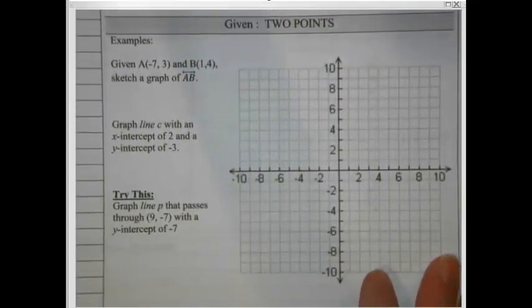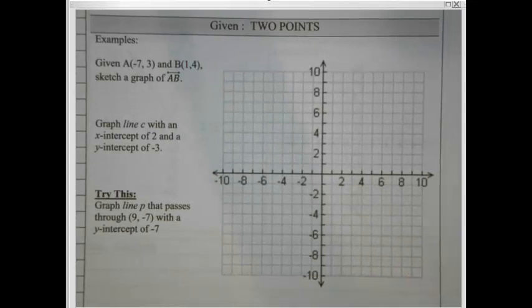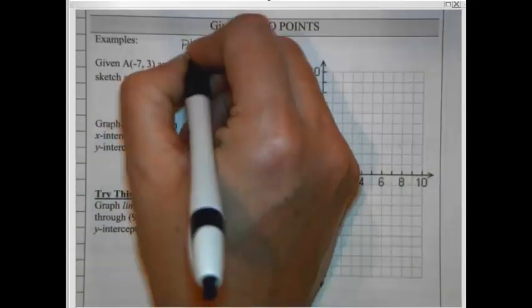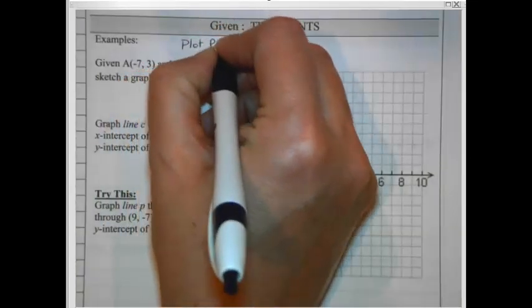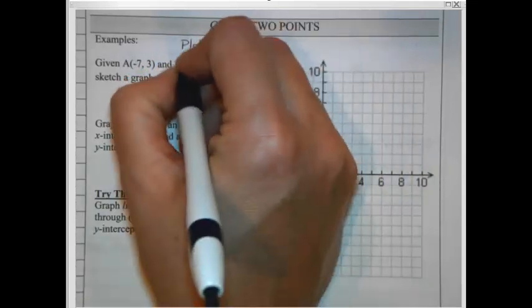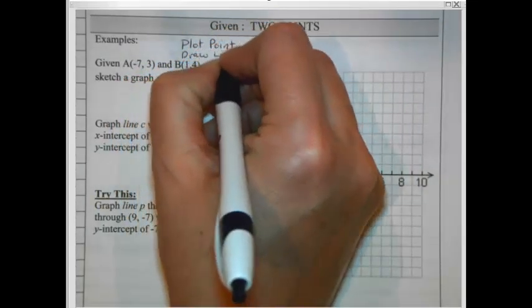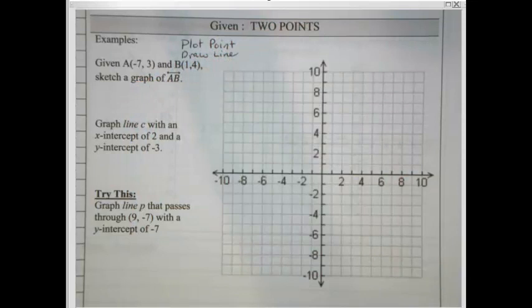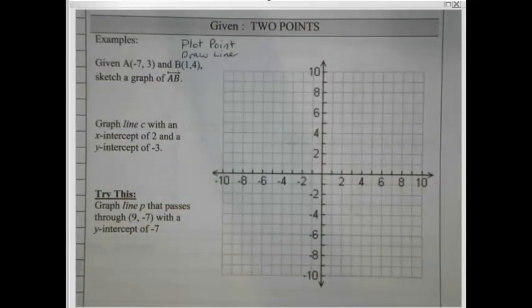First, let's start with our two points option. If you're given two points, this is pretty straightforward. You plot the two points, and then you draw the line between them. So let's run through that, and I hope you have a straight edge with you, because I do want you to be precise here.